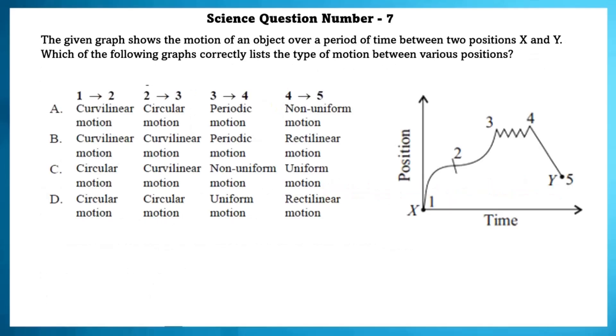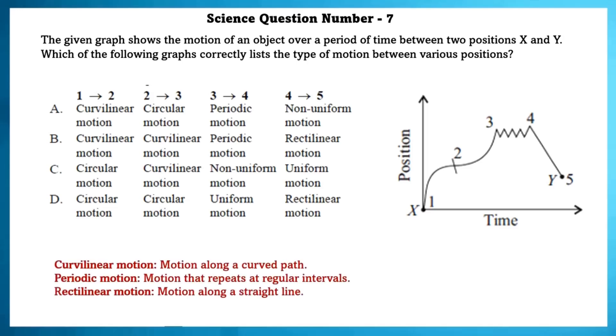Science Question Number 7. The given graph shows the motion of an object over a period of time between two positions X and Y. Which of the following graph correctly lists the type of motion between various positions? Curvilinear Motion is motion along a curved path. Periodic Motion is motion that repeats at regular intervals. Rectilinear Motion is motion along a straight line. From 1 to 3, it's curvilinear motion. Then from 3 to 4, it's periodic motion. And from 4 to 5, it's rectilinear motion.